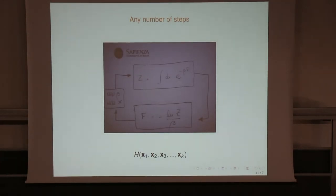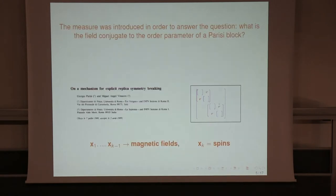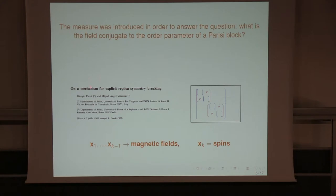Assuming for the moment full separation, the measure associated with Gibbs inside Gibbs inside Gibbs with different temperatures was, as far as I know, introduced explicitly by Miguel and Giorgio in a paper that deserves to be better known. They were not talking about multi-thermalization — maybe they had it in mind — but not about a specific bath that would do the job. It is a measure, and their question was: how can I define a parameter conjugate to a block of Parisi?